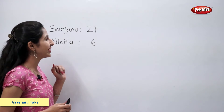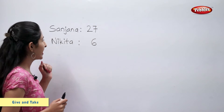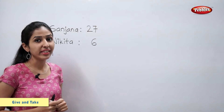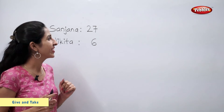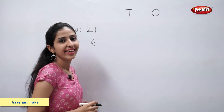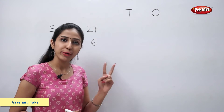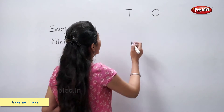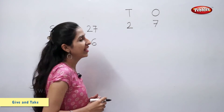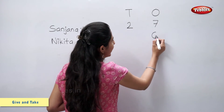Let's look at this example. Sanjana had 27 pearls. She gave 6 pearls to Nikita. We have to find the number of pearls left with Sanjana. Let's solve this using 10s and 1s. 27 means 2 tens and 7 ones. She gave 6 pearls to Nikita — so 6 ones.